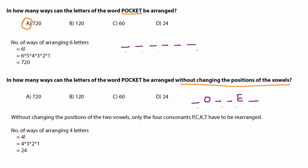The rest of the 4 letters can occupy any of the 4 places. So the number of ways of arranging 4 letters would be 4 factorial, which is 24.